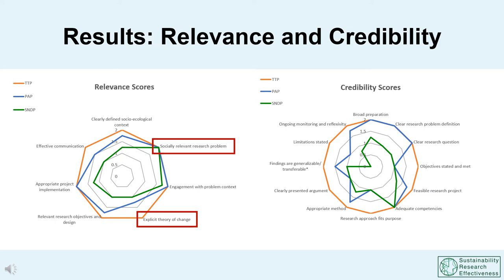Credibility had the greatest variation in scores, which was surprising as we would expect elements of scientific rigor to be the foundation of any research project. As a common strength, all projects had adequate competencies represented within the research team, such as in their use of methods, support for local languages, and interpersonal and intercultural skills. However, satisfaction of the criterion on limitations varied across the cases. Projects that scored lower did not explain the implications of project limitations on the findings.